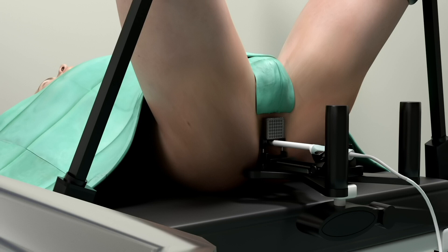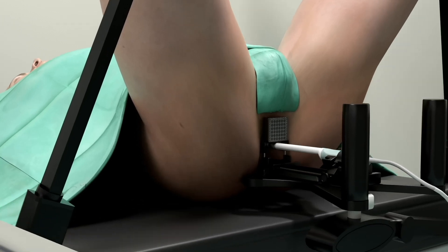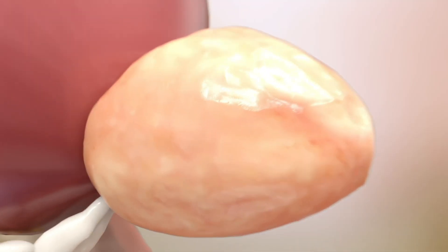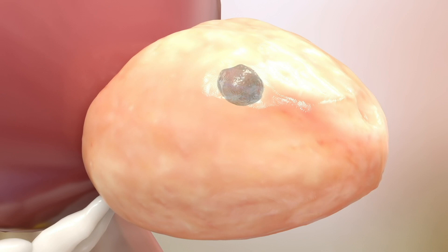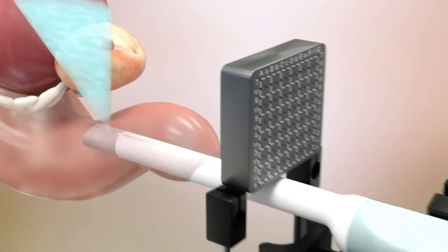The patient is placed in the dorsal lithotomy position at the edge of the table. The ultrasound is then inserted into the rectum, and the prostate is contoured and registered.